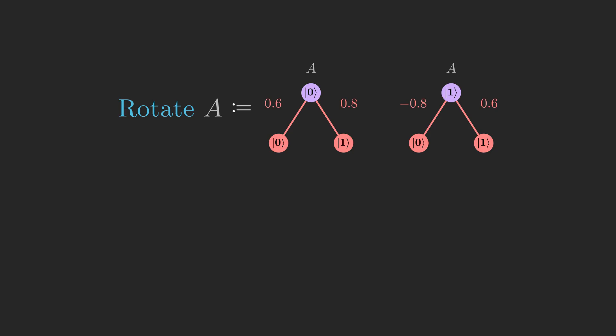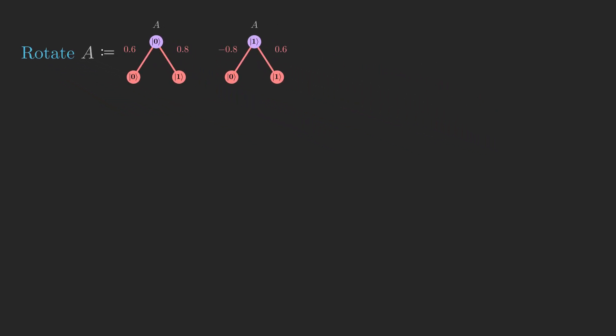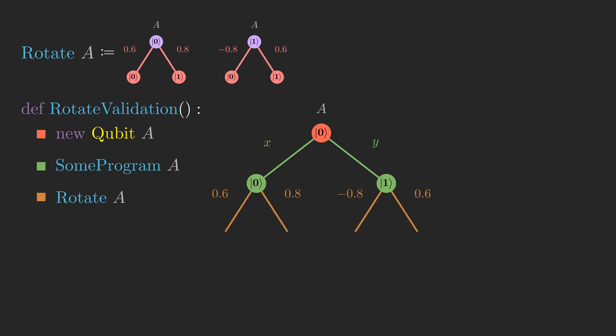We should check that rotate is a valid quantum instruction, and that is the case as long as it maps valid quantum states to other valid quantum states. So let's suppose we start with a qubit A in the 0 state, and we run some program that gets it to a state with x amplitude on 0 and y amplitude on 1, and that this is a valid quantum state, meaning x squared plus y squared equals 1. Look at what happens with the resulting amplitude tree when we apply rotate.